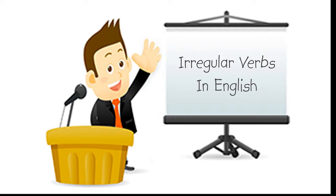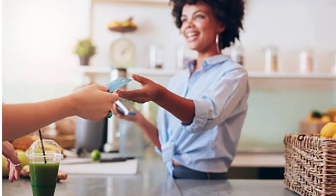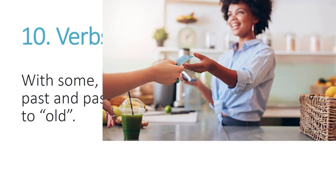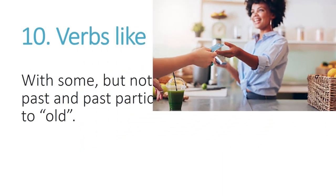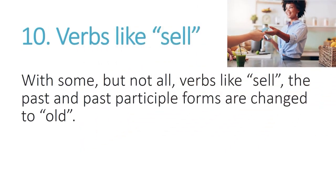This video will help you see relationships among various types of irregular verbs in English. The key to understanding irregular verbs is to look for and notice the patterns. Verbs like sell — with some, but not all, verbs like sell, the past and past participle forms are changed to old.